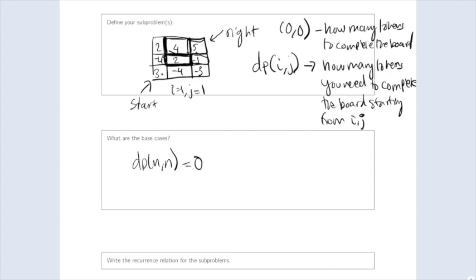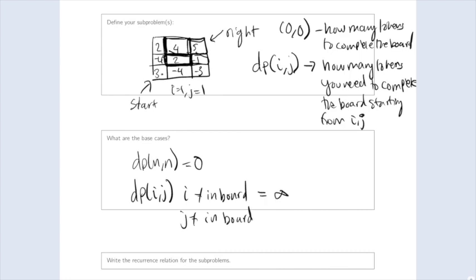Something I do to make DP easier is handle out-of-bounds positions as a base case. For any position (i, j) not in the board, I like to set DP[i][j] equal to infinity. Since we're in an illegal position, we simply cannot complete the board from there. Setting it to infinity symbolizes that it's impossible from this position, or that we're out of bounds.